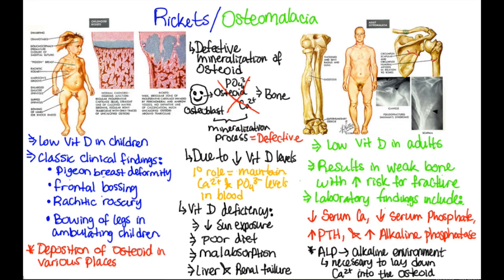In summary, rickets and osteomalacia are disorders of defective bone mineralization. Rickets is seen in children, while osteomalacia is seen in adults. Both are due to low levels of vitamin D. You can get vitamin D deficiency due to decreased sun exposure, poor diet, malabsorption, or if your liver or kidneys are not functioning properly.